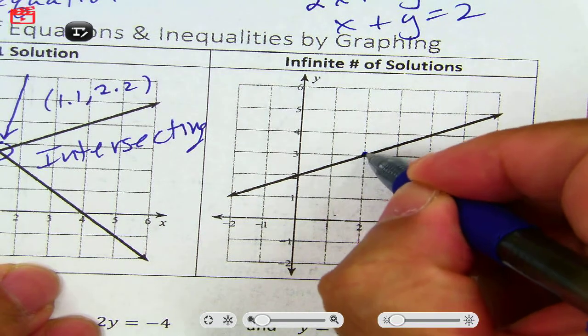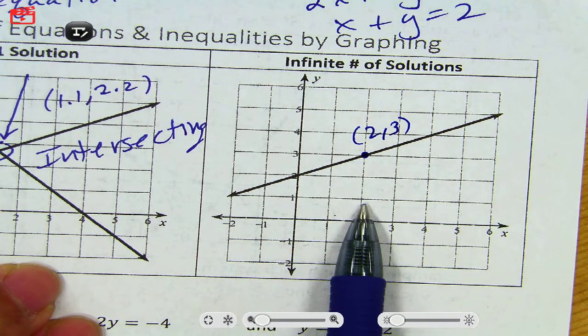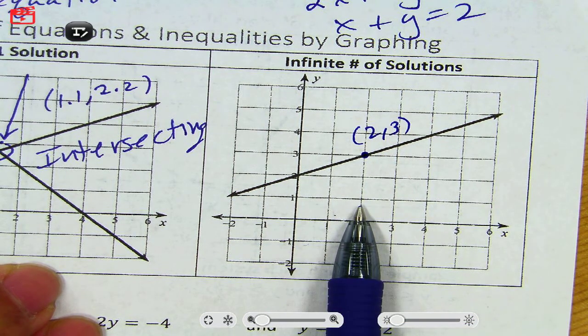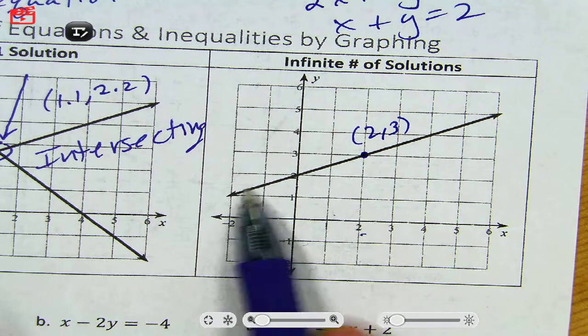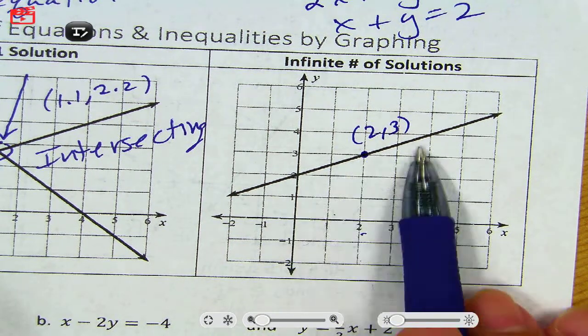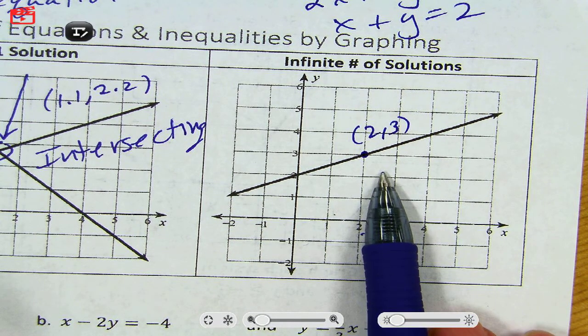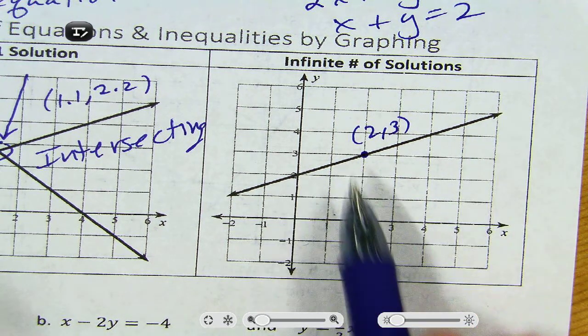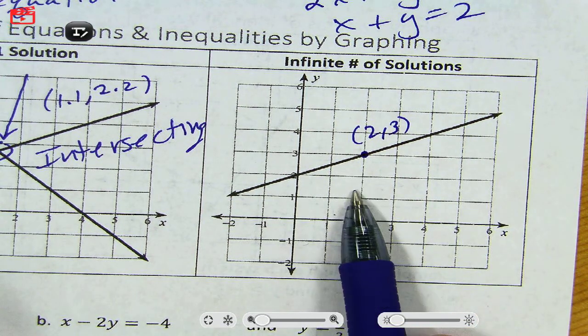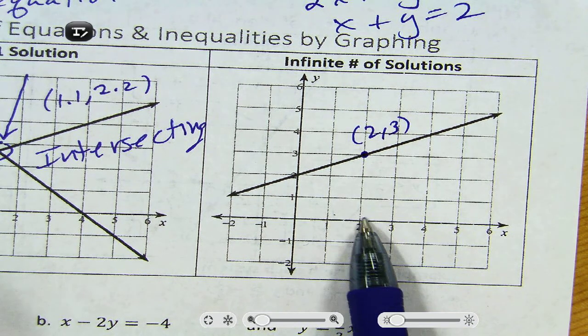Now that is different from all real numbers. Infinite number of solutions and all real numbers are different. Because a solution here, this is a solution 2 comma 3, but 2 comma 1 doesn't work. All real numbers means it doesn't matter what the number is. Infinitely many solutions just means there's an infinite number of solutions. But it does matter what the numbers are. So here's an example of a solution 2, 3 because it's on this line. But 2, 1 is not a solution. 2, 1 is not on that line. So 2, 1 is not a solution.